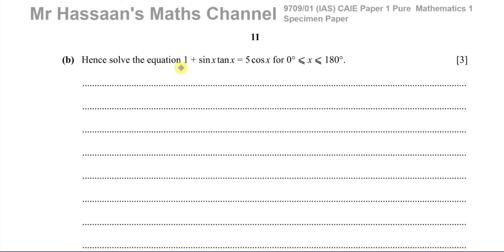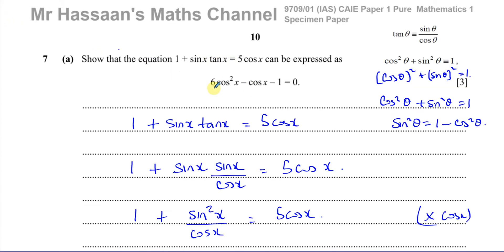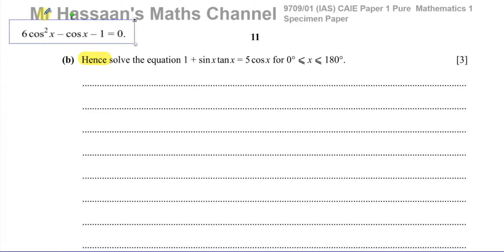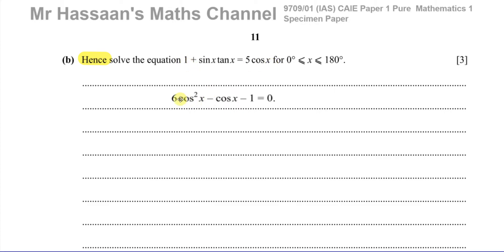For part B, it says: hence, solve 1 plus sine x times tan x equals 5 cosine x for x between 0 and 180 degrees. The word 'hence' means use your previous answer. We showed in part A that the equation becomes 6 cosine squared x minus cosine x minus 1 equals 0, which is essentially a quadratic — 6 times something squared minus the same thing minus 1. So let b equal cosine x, giving 6b squared minus b minus 1 equals 0.